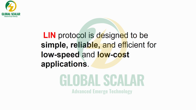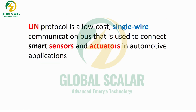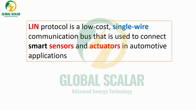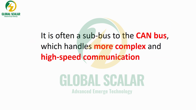LIN protocol is designed to be simple, reliable, and effective for low-speed and low-cost applications. It is a low-cost, single-wire communication bus used to communicate with sensors and actuators in automotive applications. It is often used as a sub-bus to CAN, which can handle more complex and high-speed communication — CAN supports up to 1 Mbps.